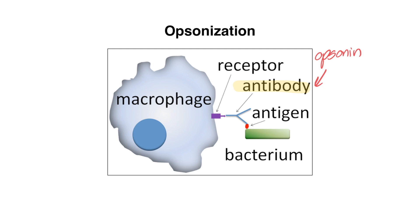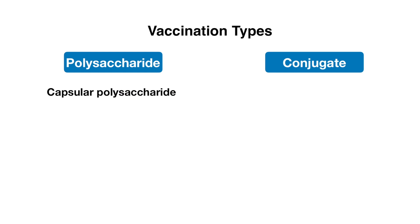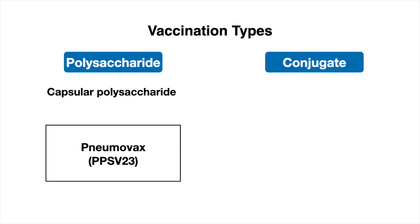With pneumococcal vaccination, there are two vaccination types to know about: the polysaccharide type and the conjugate type. As the name implies, the polysaccharide type consists of pneumococcal capsular polysaccharides. There is only one available formulation, which contains 23 pneumococcal polysaccharides, known as Pneumovax or PPSV23.